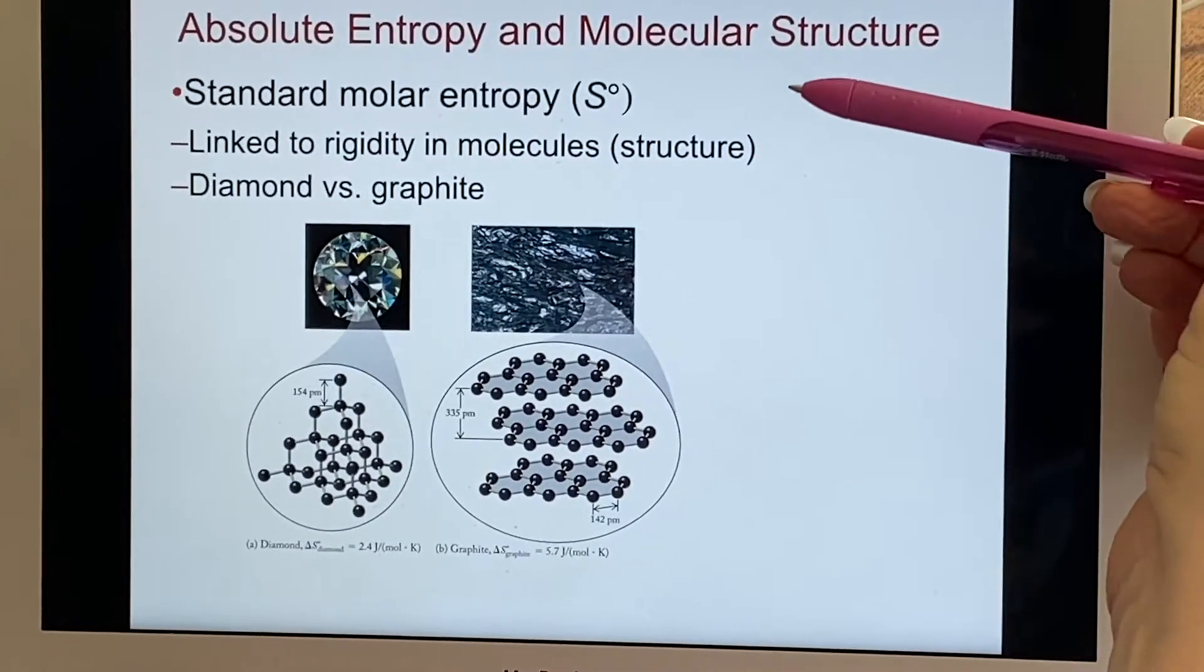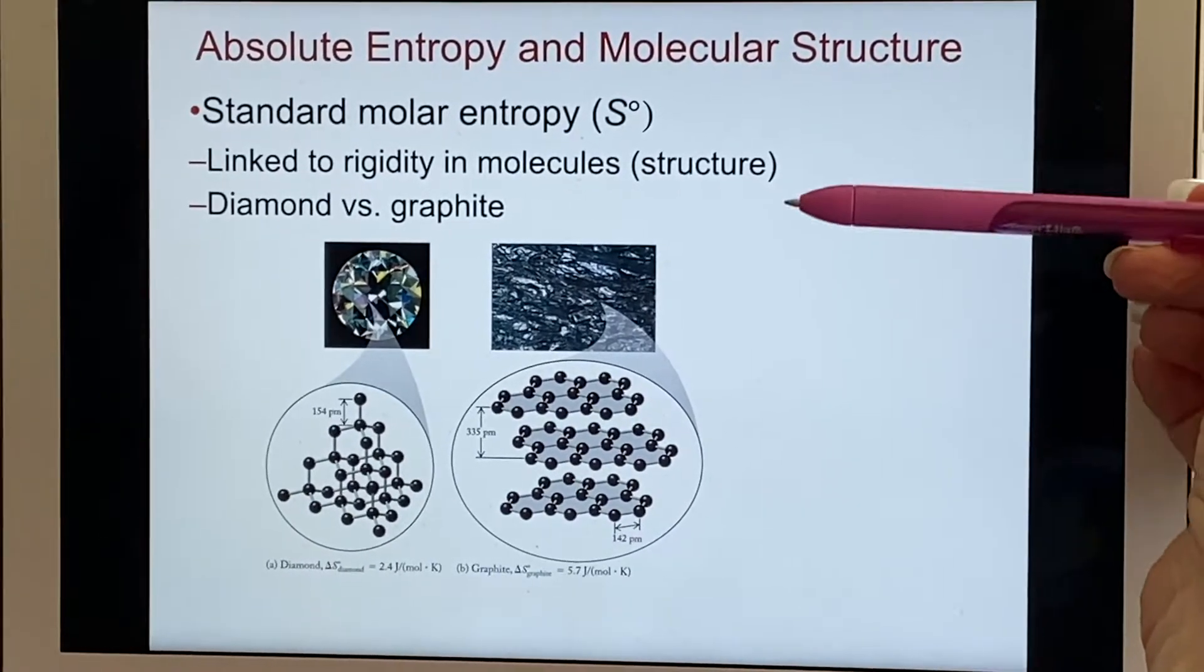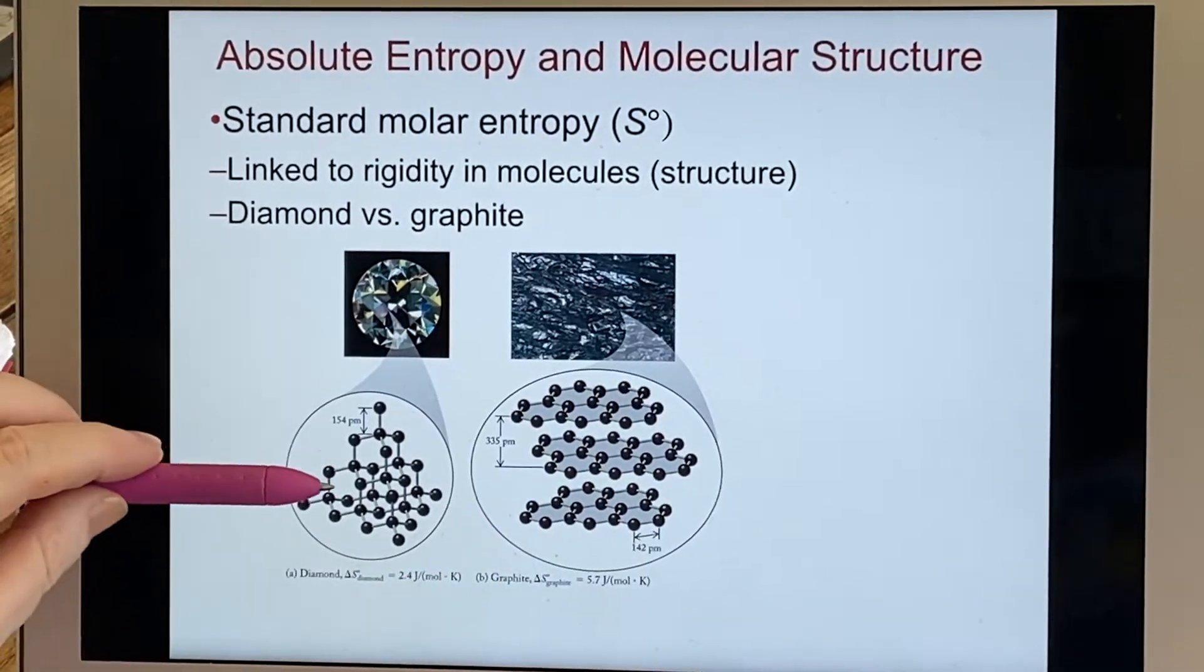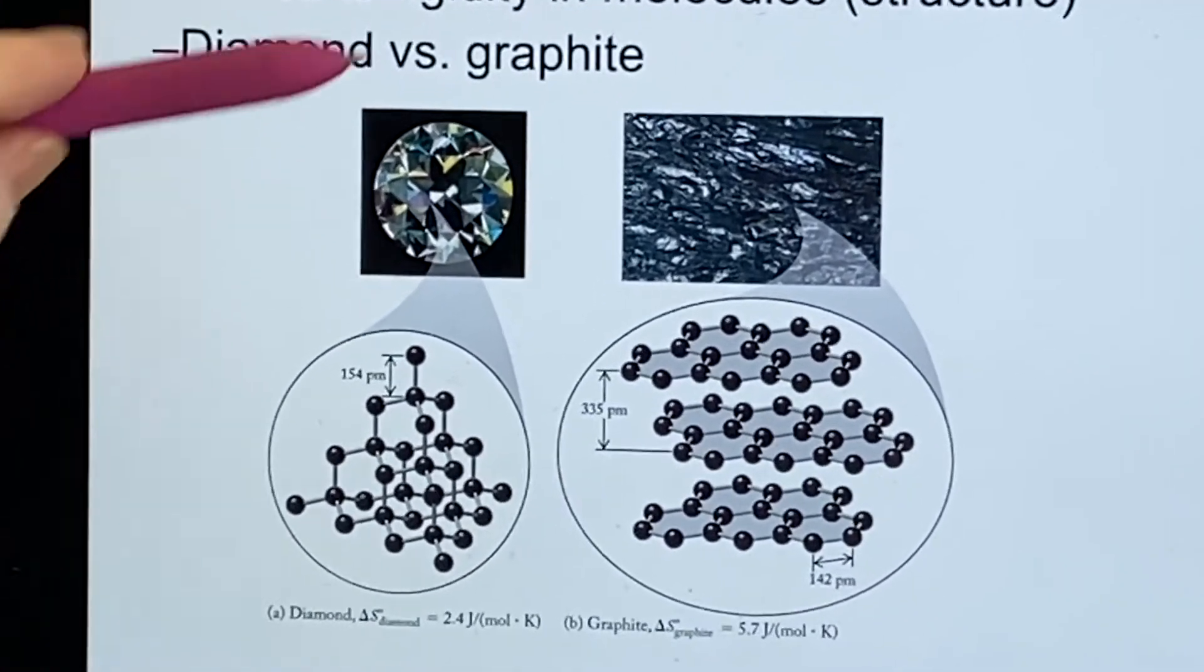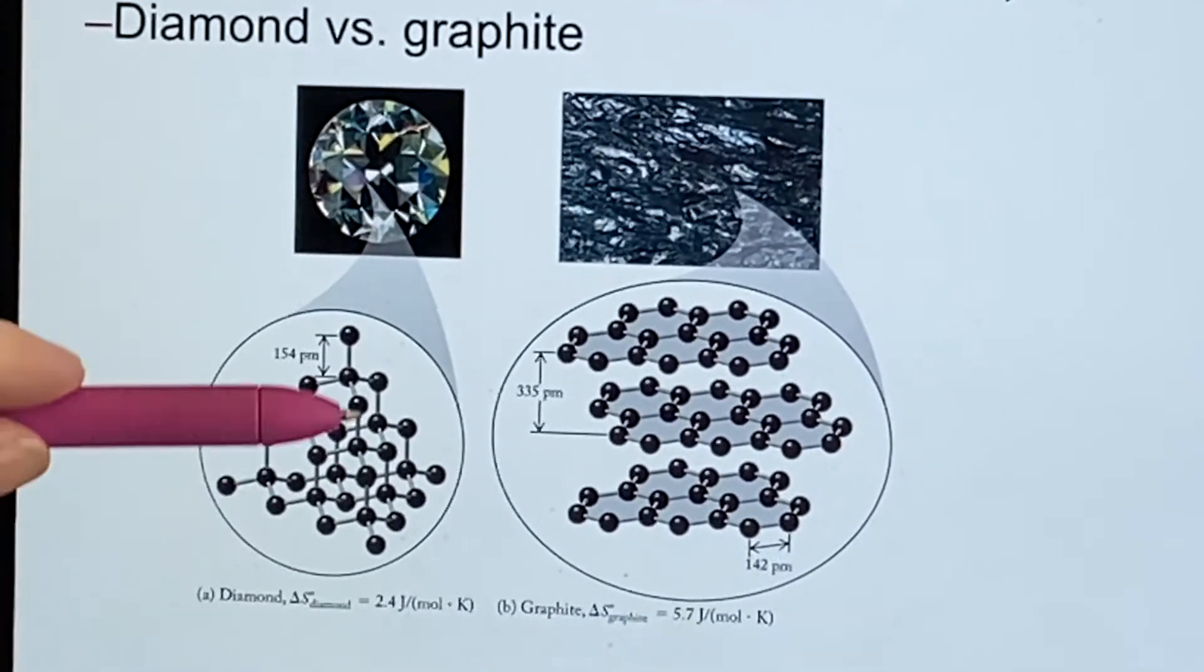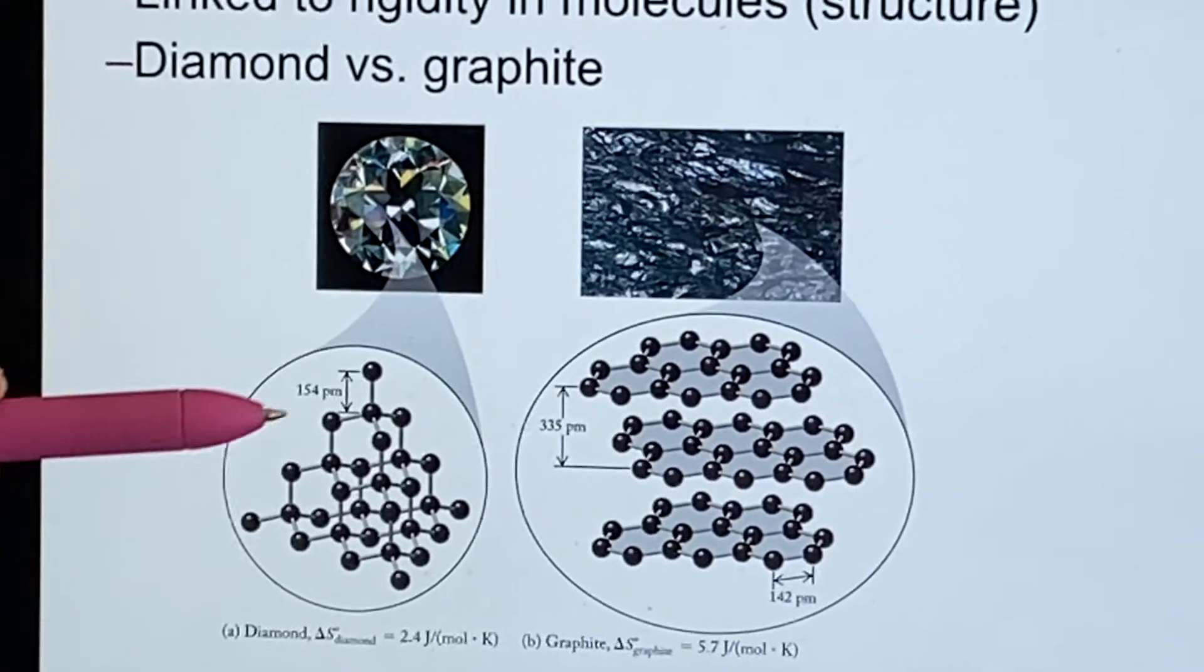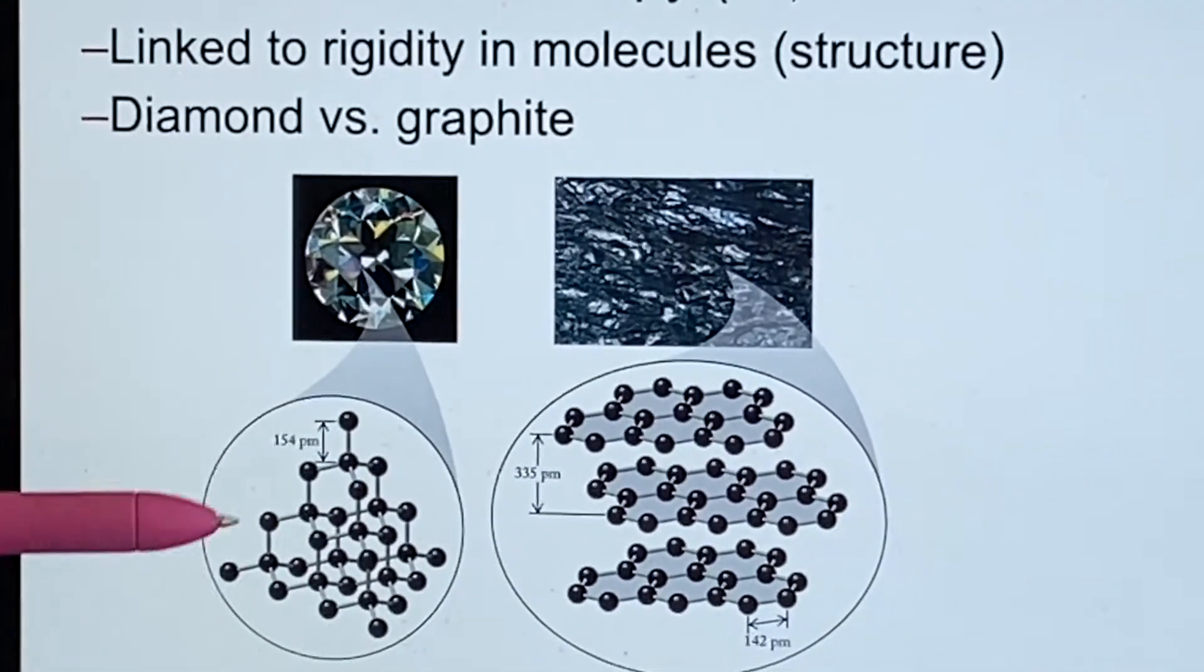Another thing that is interesting is to consider a couple of the different possibilities. How does carbon exist in the world? One way it exists is as diamonds and another way is as graphite. Diamonds have this structure. It's a three-dimensional structure where each carbon is attached to four other carbons in a lattice.